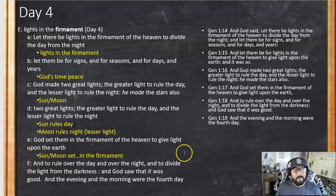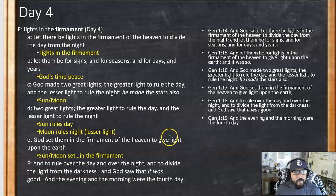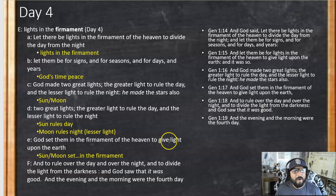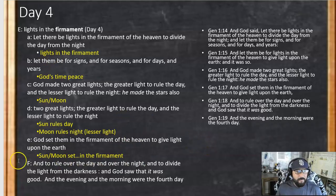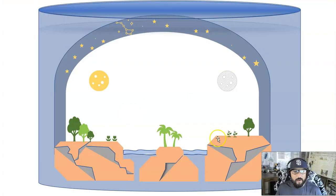Day four — lights in the firmament. "Let there be lights in the firmament of heaven to divide the day from the night. Let them be for signs and for seasons and for days and years" — God's timepiece, God's watch. God made two great lights: the greater light to rule the day, the lesser light to rule the night — the sun and the moon. Sun rules the day, moon rules the night, and the sun and moon are set in the firmament.